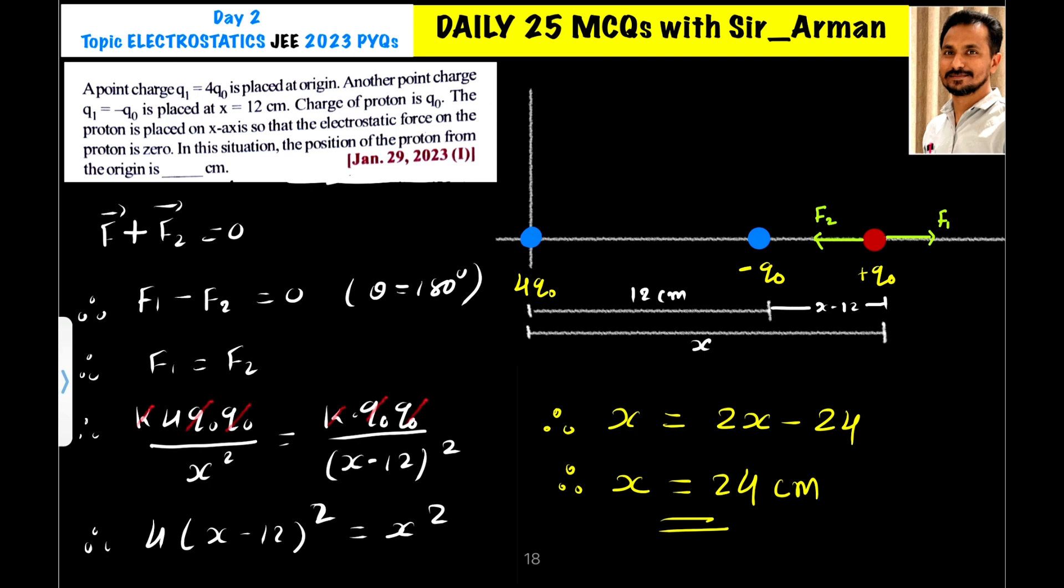Taking square root on both sides, this will become 2. So here it will be 2 times x minus 12, and that equals x. If I multiply this 2 inside, then it becomes 2x minus 24. So 2x minus 24 equals x.